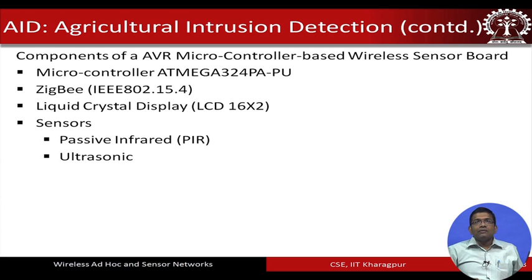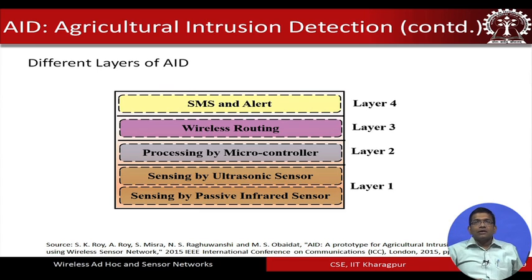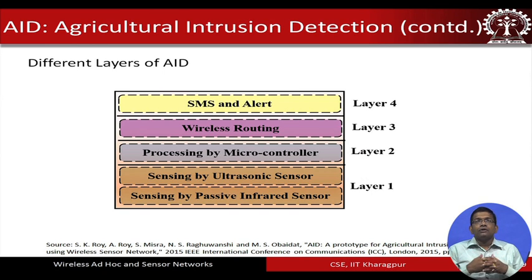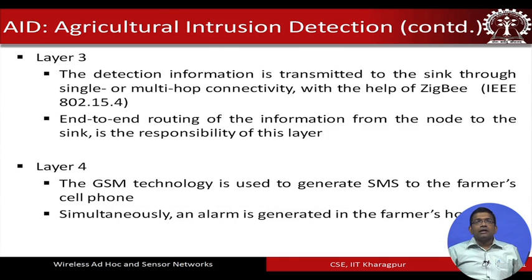More specifically, an AVR-based microcontroller — ATmega324PA — was used, along with ZigBee communication based on IEEE 802.15.4 standard. The system has four layers: Layer 1 is concerned with sensing by the ultrasonic and PIR sensors; Layer 2 is processing by the microcontroller; Layer 3 handles wireless routing through a multi-hop path to the sink node; and Layer 4 handles applications — sending alert SMS messages to farmers' mobiles.